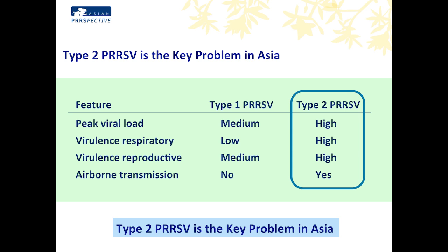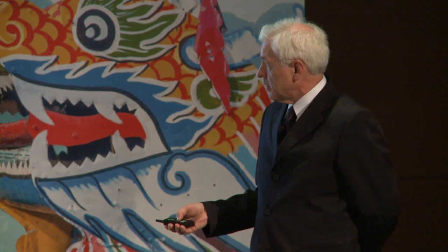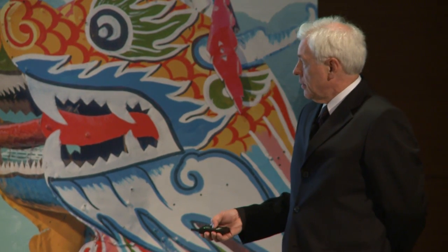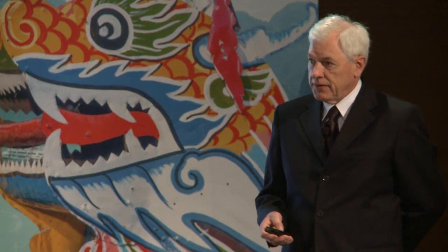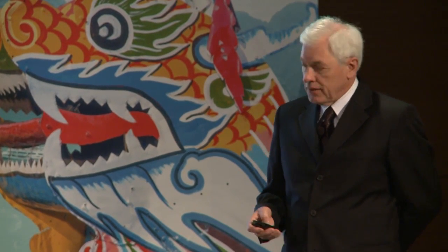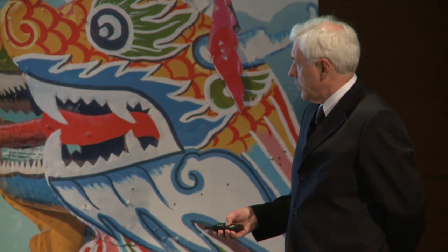I believe, and I think I will show you with some of the data in the presentation, that type 2 viruses are the key problem in Asia, as in North America, because they grow to higher levels in pigs, they clearly have higher virulence in respiratory disease in growing animals, they clearly have more severe reproductive disease, and they clearly are readily transmitted in high hog-dense regions by airborne transmission. There are reports of finding PERS type 1 virus in air outside of infected barns in Europe, but demonstrating transmission has basically never been done, to my knowledge.